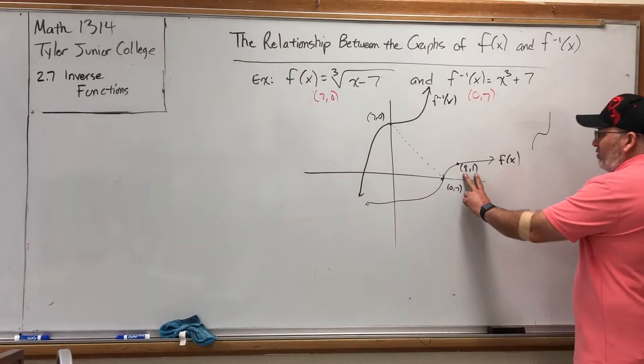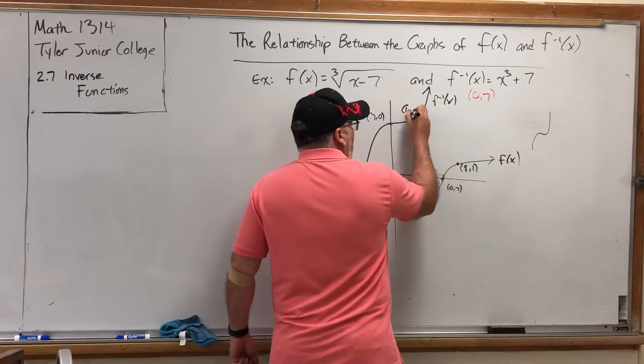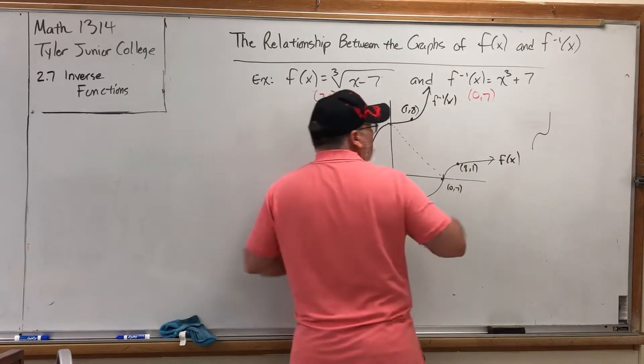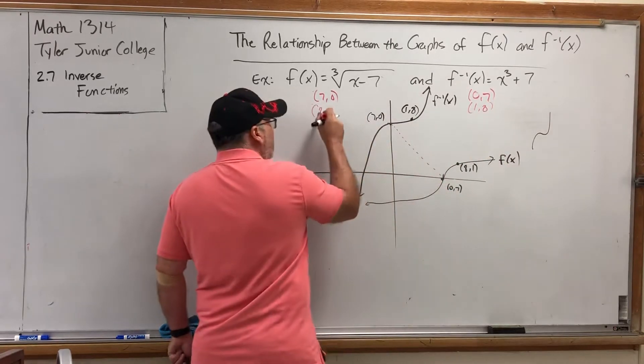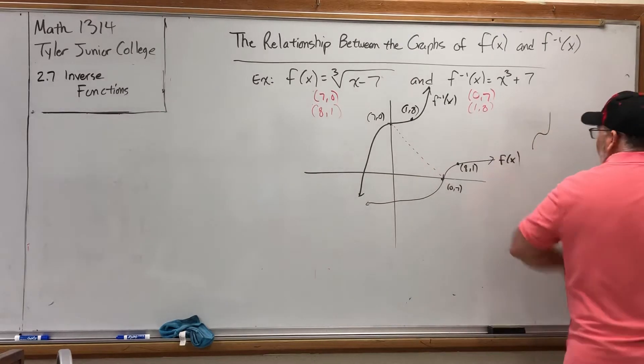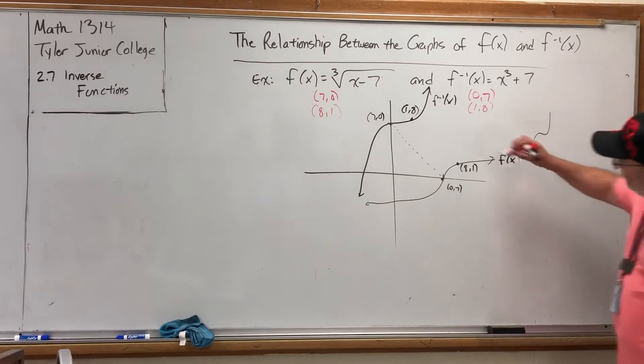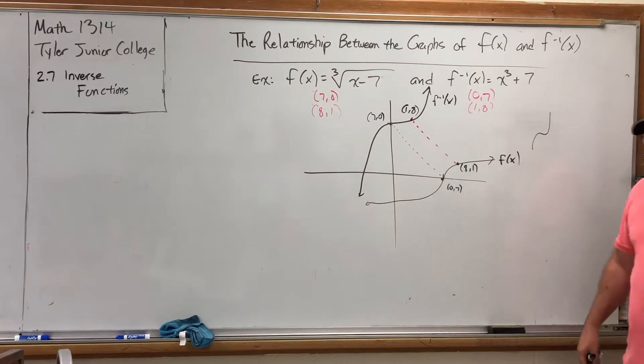So if (8,1) is on this graph, guess what's on this graph? Again, not drawn to scale. (1,8). Because 1 cubed plus 7 is 8. And again, we can do the same thing with any ordered pair that we find. So that's one relationship.